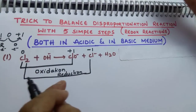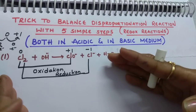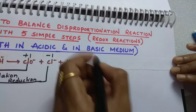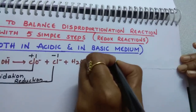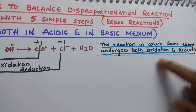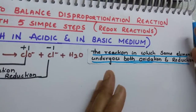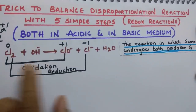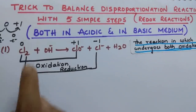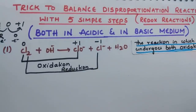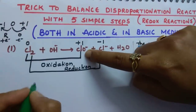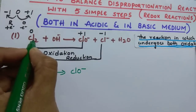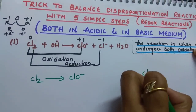If you observe, chlorine is undergoing both oxidation as well as reduction. The element which is undergoing both oxidation and reduction in a particular chemical reaction — that reaction we call a disproportionation reaction. So the reaction in which the same element undergoes both oxidation and reduction is called a disproportionation reaction. Now separate both reactions: the oxidation reaction is Cl₂ converted into ClO⁻, and the reduction reaction is Cl₂ converted into Cl⁻.